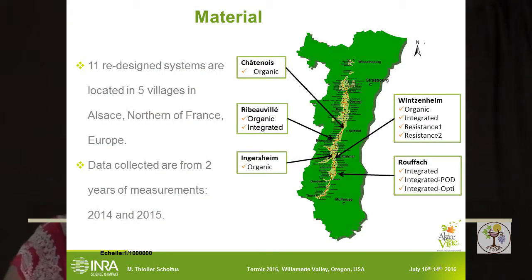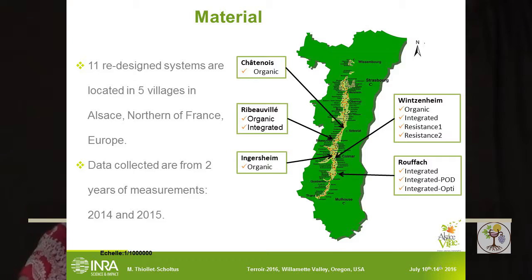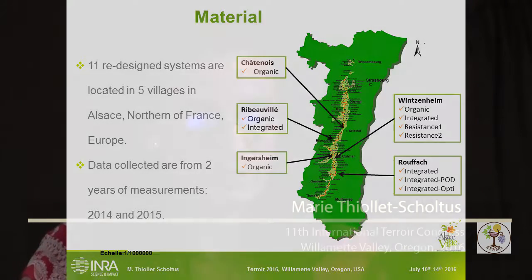The products assessed are first the harvested grapes and the wine. We have 11 redesigned systems in the Alsace region, on the border of Germany and France. Data were collected from two years of measurement, 2014 and 2015, and we are going to continue data collection until 2018, so we will have a nice database to present at the next congress.